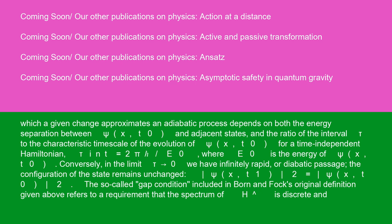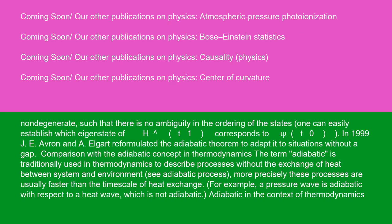The so-called gap condition, included in Born and Fock's original definition, refers to a requirement that the spectrum of H-hat is discrete and non-degenerate, such that there is no ambiguity in the ordering of the states. One can easily establish which eigenstate of H-hat(T1) corresponds to psi(T0). In 1999, Averin and Aylgart reformulated the adiabatic theorem to adapt it to situations without a gap.